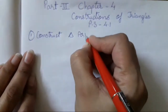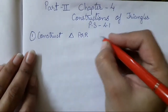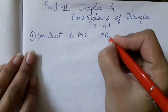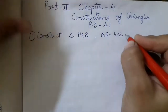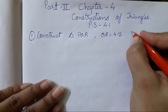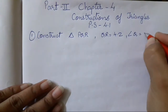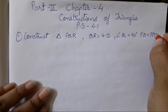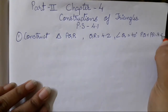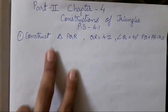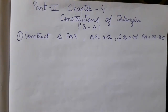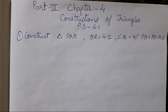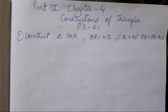The first question is to construct triangle PQR in which QR is equal to 4.2, angle Q is equal to 40 degrees, and PQ plus PR is equal to 8.5. This is the first question from exercise 4.1. First I will draw a rough figure and then explain accordingly.